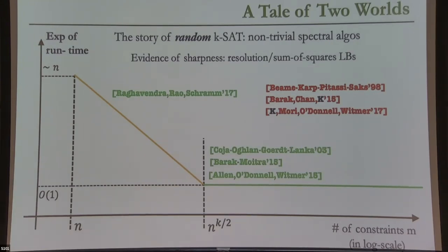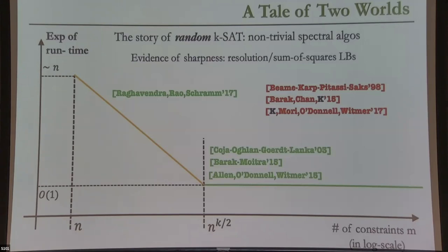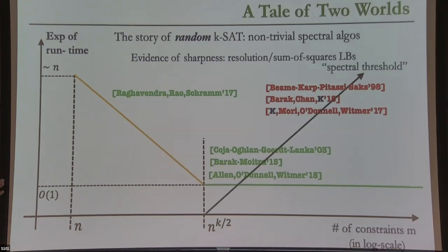These two thresholds are quite different from the worst-case setting, telling us something non-trivial is happening in the average case. There are sophisticated non-trivial spectral algorithms causing this behavior, arising from eigenvalue computations of appropriate matrices. The threshold N^{K/2} turns out to be a natural stopping point for several different algorithmic approaches, so we call this the spectral threshold — polynomial-time algorithms don't know how to beat it so far.